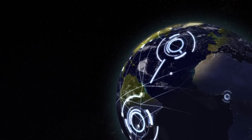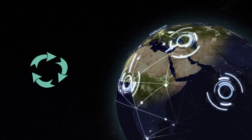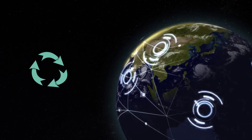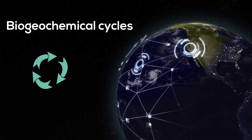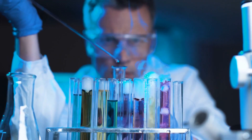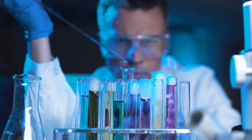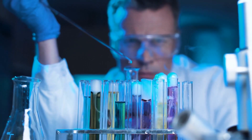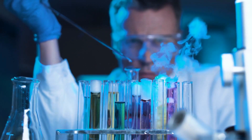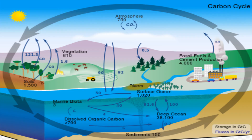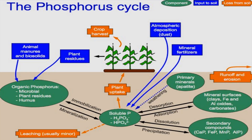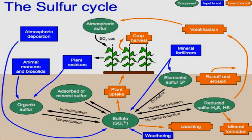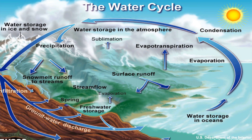The next process that sustains life is the cycling of nutrients within the biosphere. The Earth has several biochemical cycles that recycle important chemicals. These cycles move chemical substances from biotic, or living organisms, and abiotic, non-living organisms of the Earth. There are biochemical cycles for carbon, oxygen, nitrogen, phosphorus, sulfur, and water. These cycles keep recycling these important chemicals so that we don't run out of them.